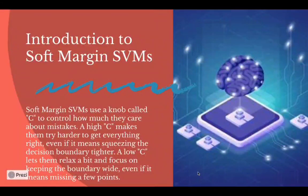Soft Margin SVMs use a knob called C to control how much they care about mistakes. A high C makes them try harder to get everything right, even if it means squeezing the decision boundary tighter. A low C lets them relax a bit and focus on keeping the boundary wide, even if it means missing a few points.